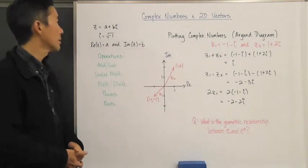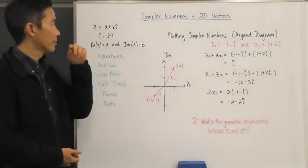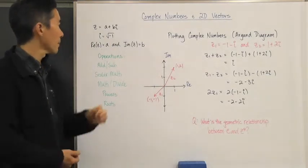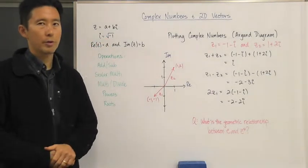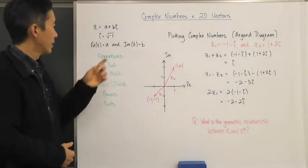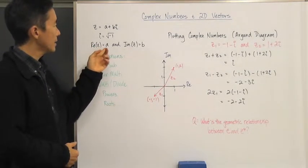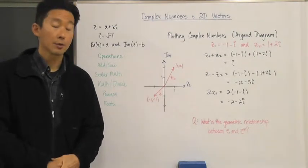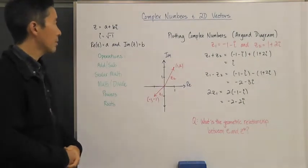Remember that we said that any complex number is going to have the form a plus bi, where i is going to be equal to the square root of negative one, which is also called our imaginary unit. The real part of z is going to be equal to a, and the imaginary part of z is going to be equal to b.